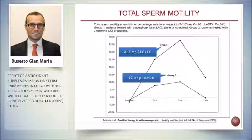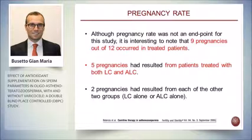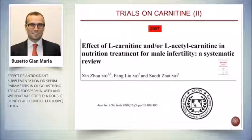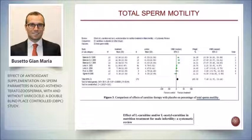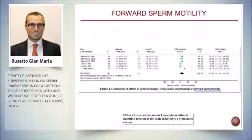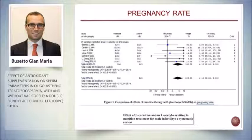The pregnancy rate — an important parameter even if not a primary endpoint of that study — showed 12 pregnancies, with 9 occurring in treated patients. A 2007 meta-analysis evaluated the most important sperm parameters: concentration, total sperm motility, forward sperm, and atypical sperm forms — all were in favor of treatment.